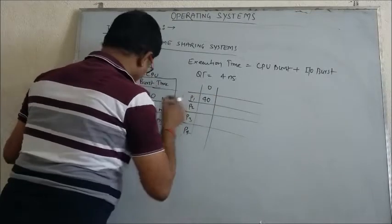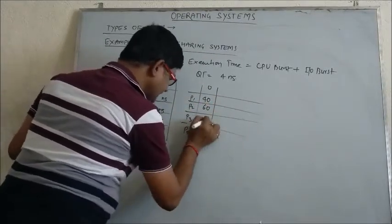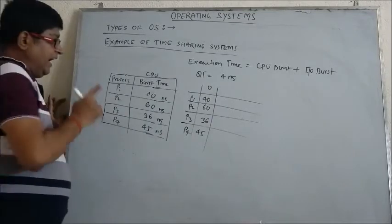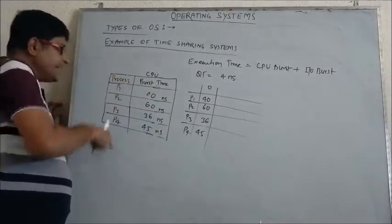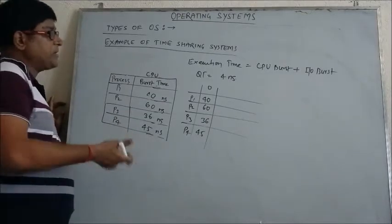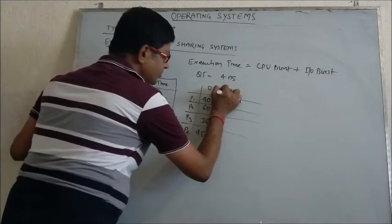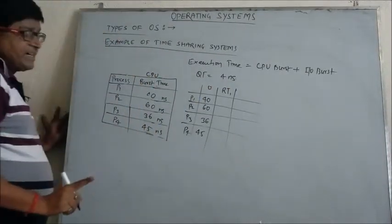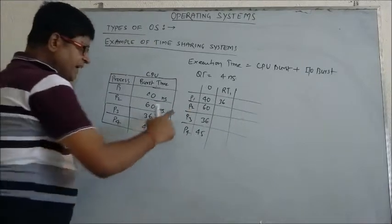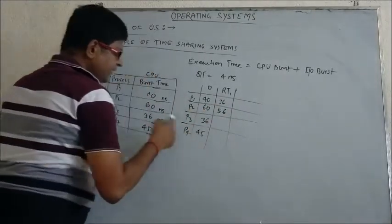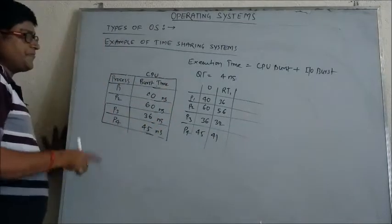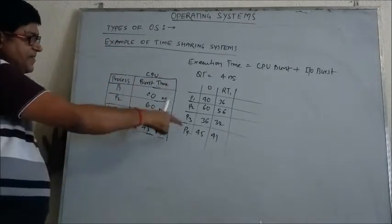The initial burst times are: P1 = 40, P2 = 60, P3 = 36, P4 = 45. The CPU takes each process one by one and executes it for 4 nanoseconds. After the first iteration, the remaining times (RT) are: P1 = 40 − 4 = 36, P2 = 60 − 4 = 56, P3 = 36 − 4 = 32, P4 = 45 − 4 = 41.